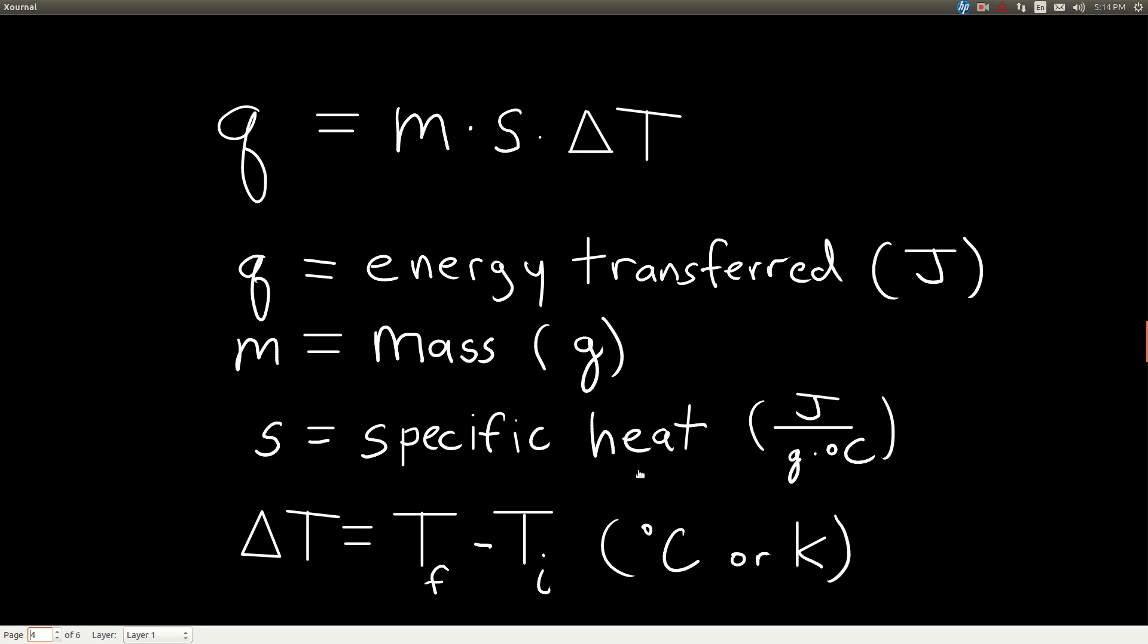s is the specific heat capacity. Usually we just say specific heat. We omit the word capacity. Its units are joules per gram degree Celsius or joules per gram Kelvin, same thing. Delta T is the change in temperature. Remember this: it's always the final minus the initial temperature. It's in degrees Celsius or Kelvin. It doesn't matter.